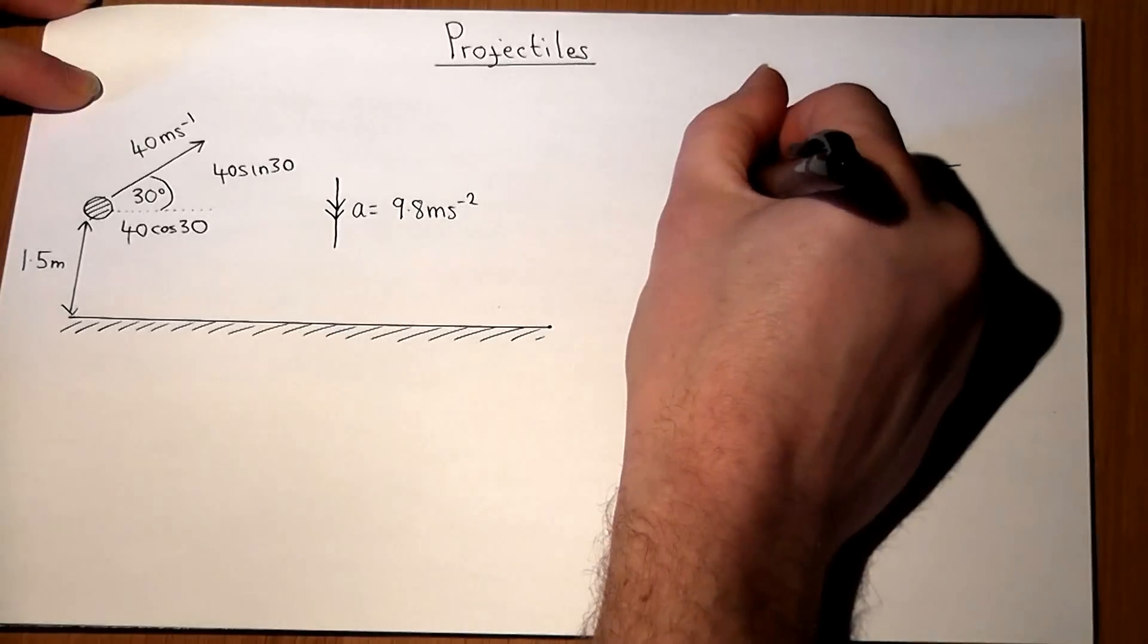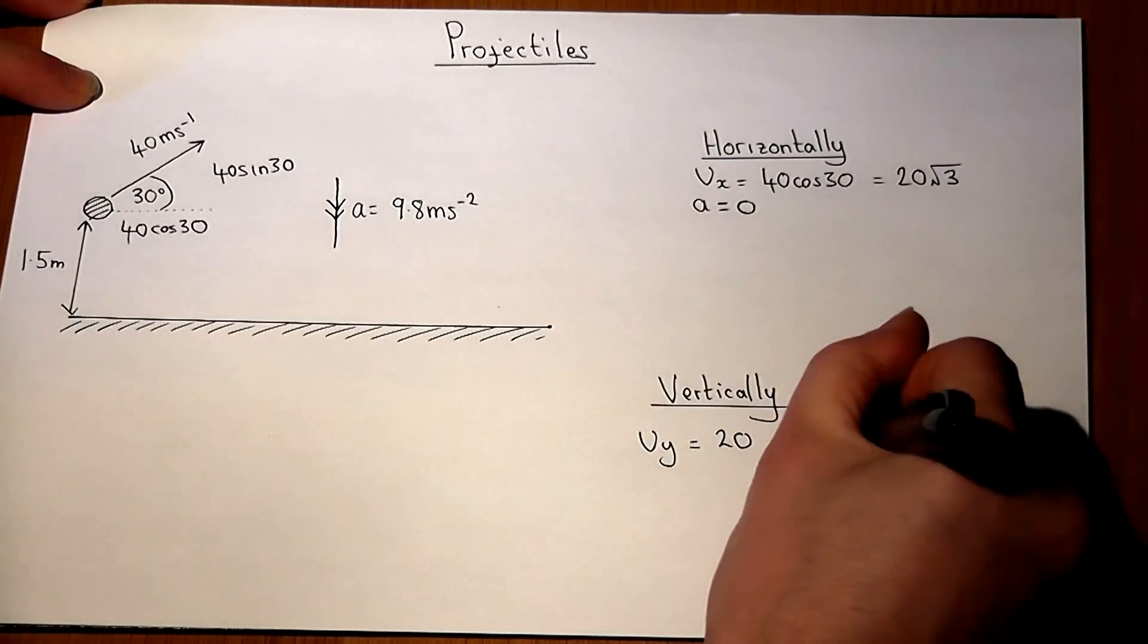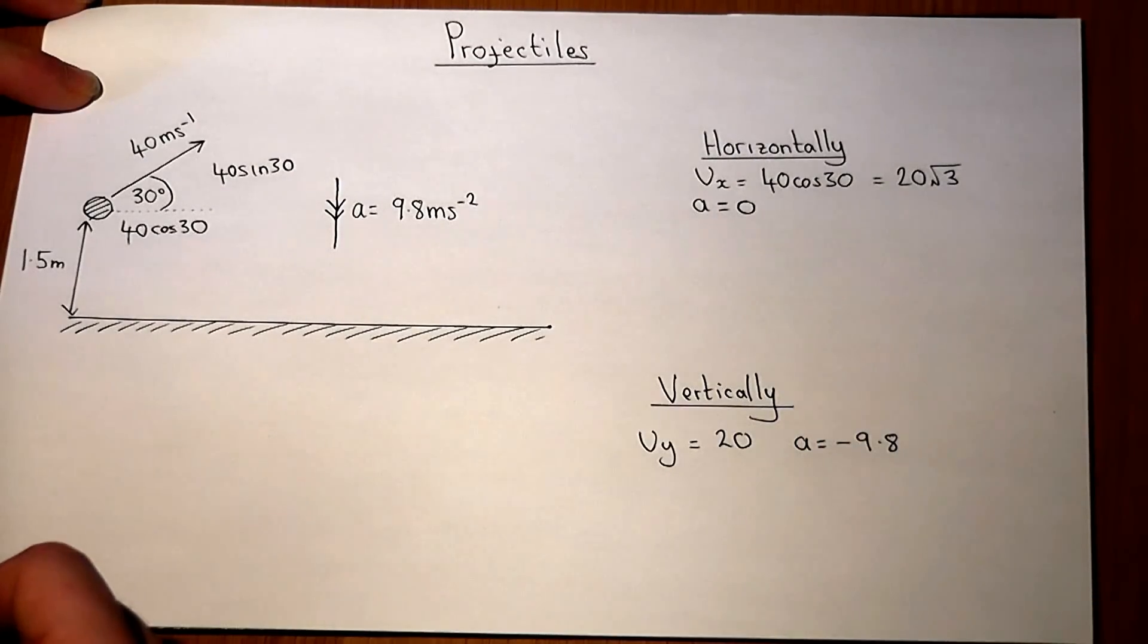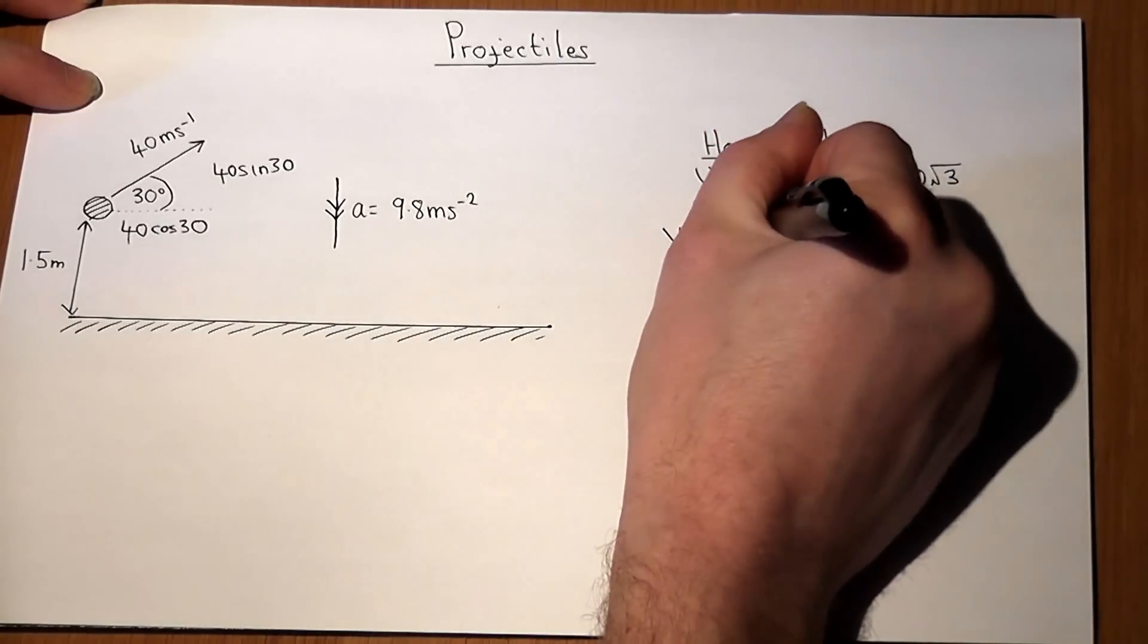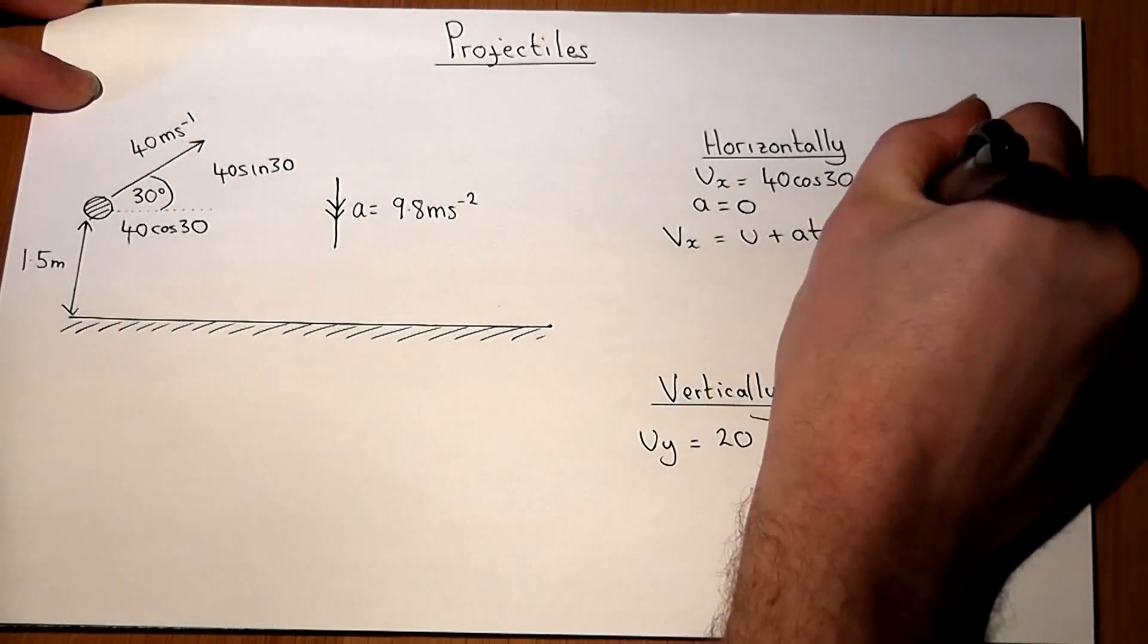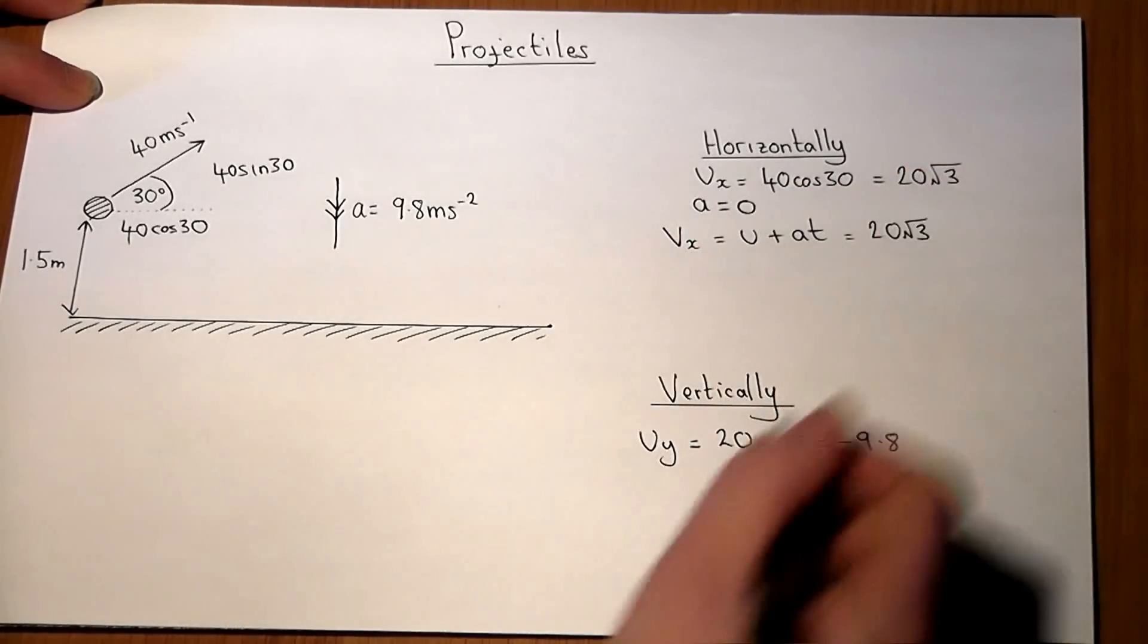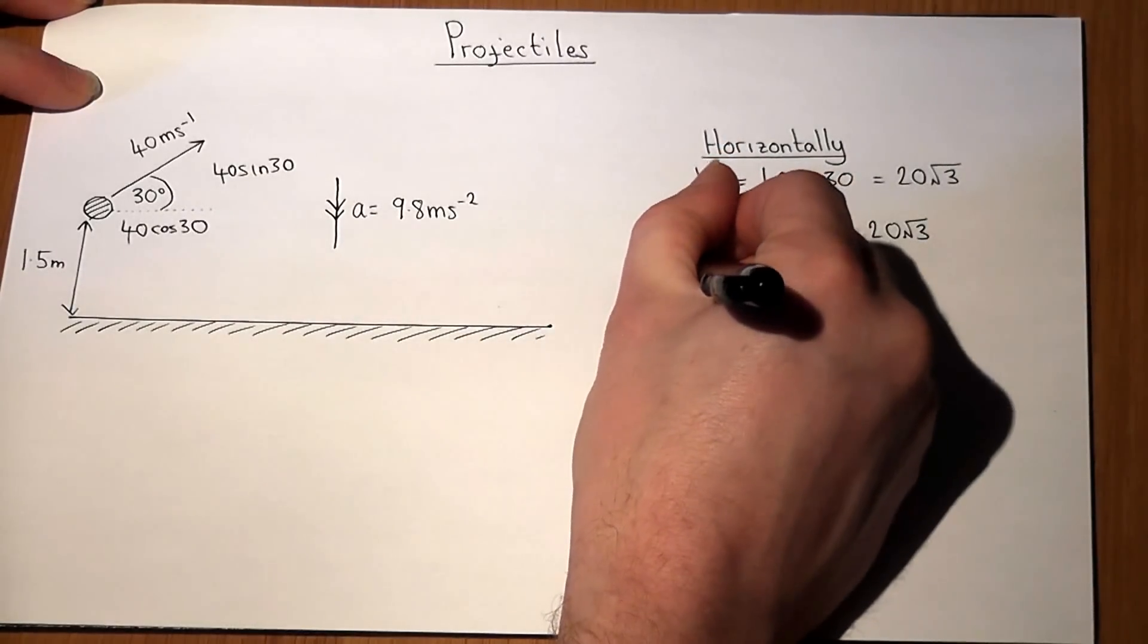Horizontally a equals 0, but vertically a equals minus 9.8. We can now use the constant acceleration formulas to write down the equations of motion. So v horizontally equals u plus at, but u equals 20 root 3 and a equals 0, so v_x will equal 20 root 3.